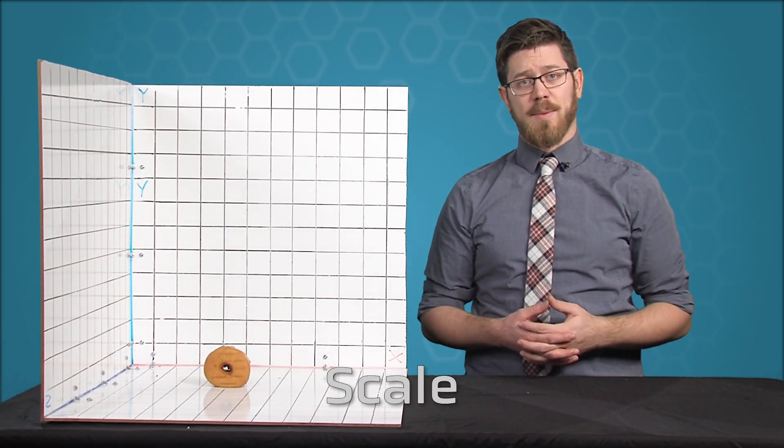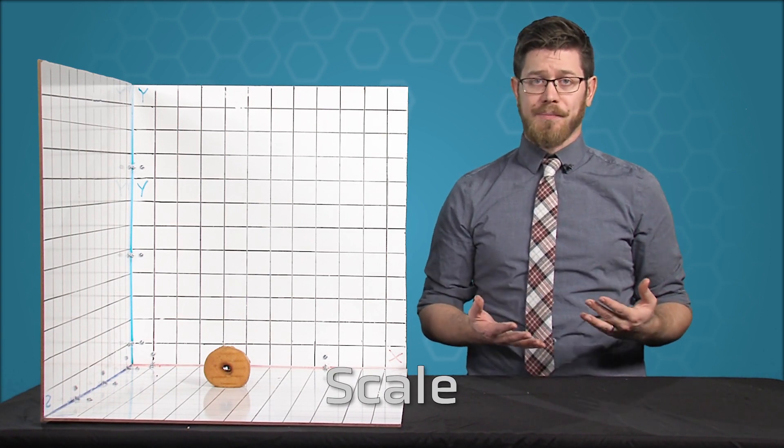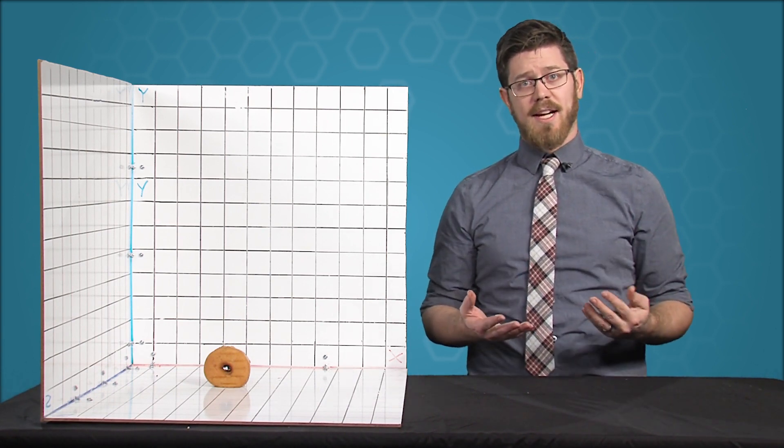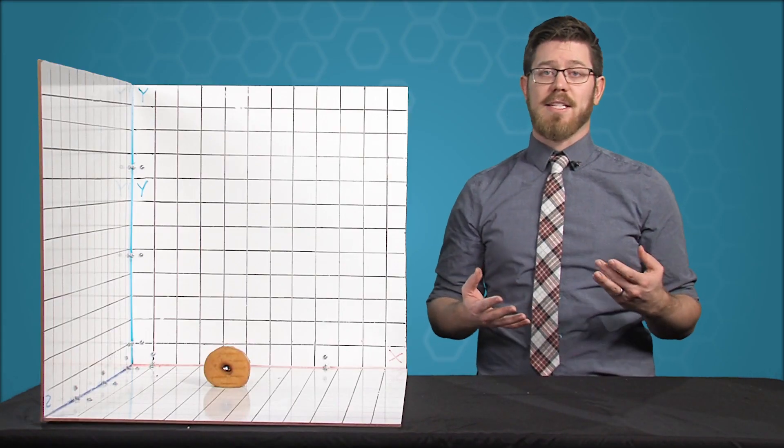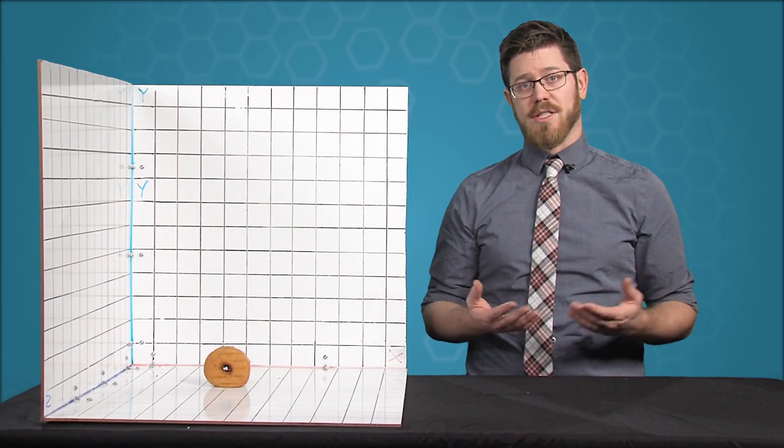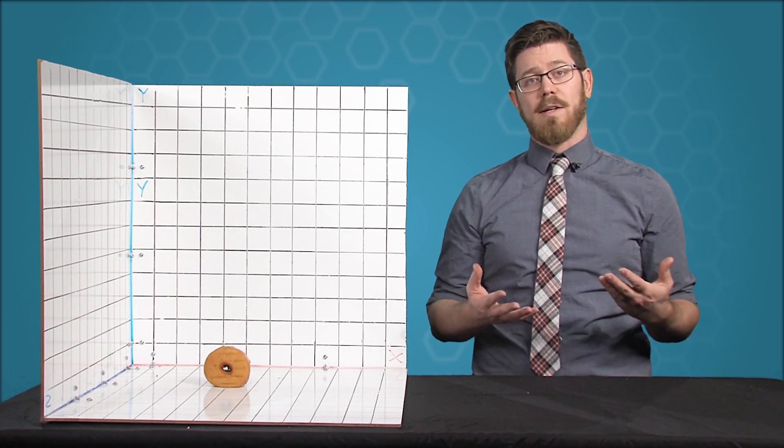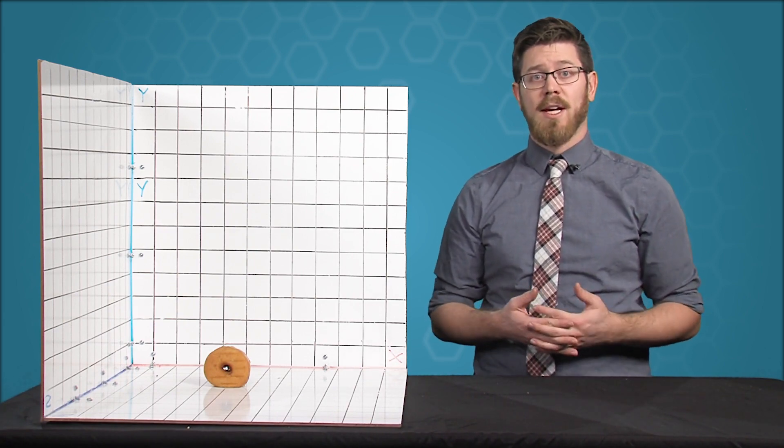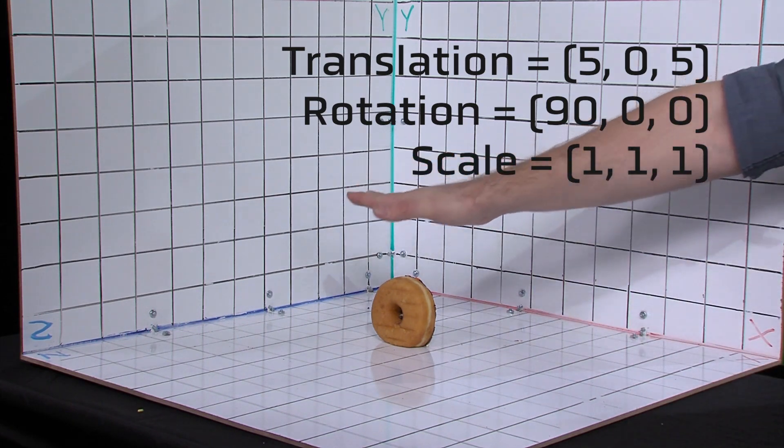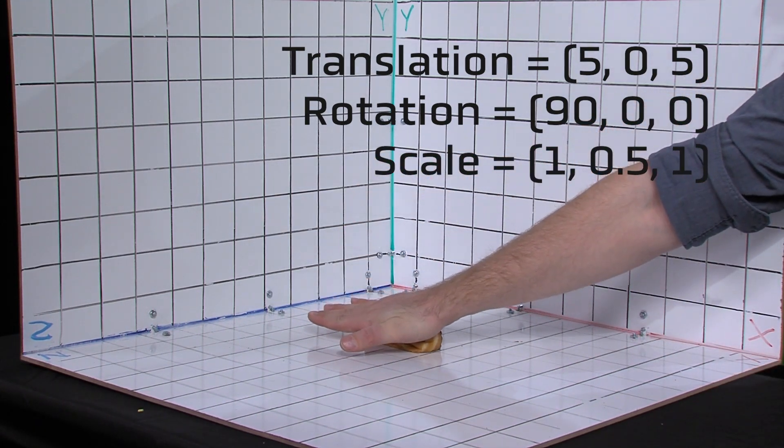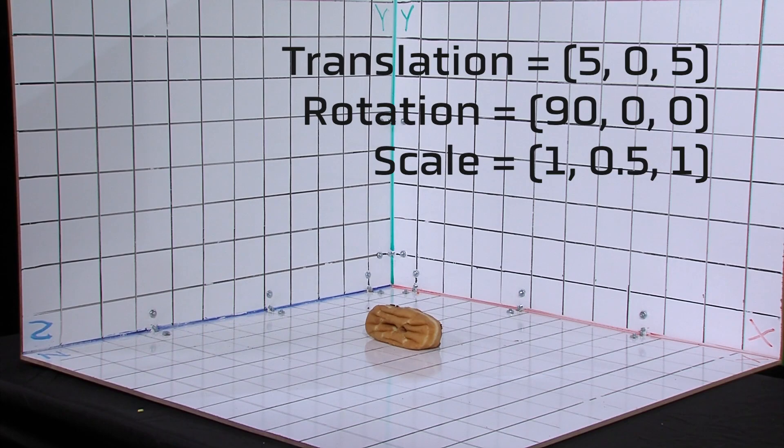Finally, the last transformation attribute is called the scale. Scale determines the size of the object. By default, the scale of an object is actually 1 because it describes a multiplier on the object's initial size. Because any size multiplied by 1 is that original size, a default value of 1 means the size won't change. But for instance, if I compress this donut along the y-axis to about half of its original height, we get a scale value of 0.5.